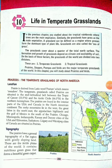This is the topography of the area. The prairies have a general topography of a flat region — generally flat regions with gently sloping land. These are the fertile plains of the world.